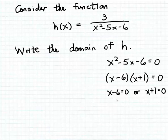And then we can just solve these two resulting equations. So this first equation we can solve by adding 6 to both sides of the equation. So that gives the solution x equals 6. And this second equation we can solve just by subtracting 1 from both sides of the equation.